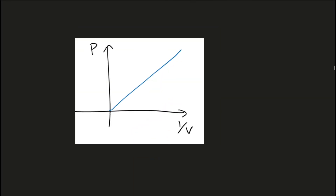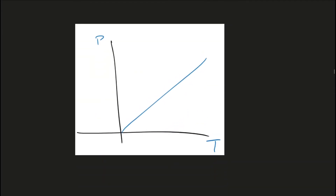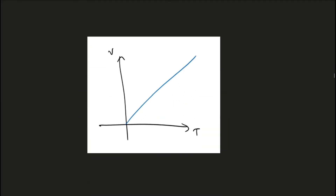This graph shows the relationship between pressure and volume again, but this time we have the reciprocal of volume on the x-axis, so the graph becomes a straight line passing through the origin. This graph shows the relationship between pressure and temperature — if all other quantities like volume and mass are constant, then pressure and temperature are directly proportional to each other. The next graph shows that volume and temperature are also directly proportional to each other for an ideal gas, if pressure and mass of the gas are constant.